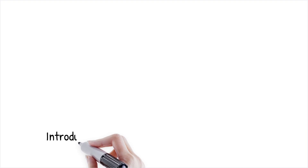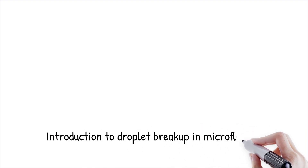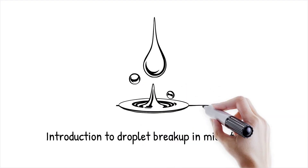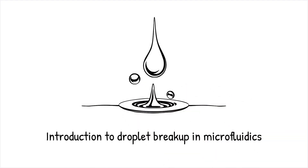Breakup, on the other hand, involves the splitting of a larger droplet into smaller ones. This is achieved by applying external forces that overcome the cohesive forces maintaining the droplet's integrity. Key mechanisms for breakup in microfluidics include shear forces, extensional stresses, or active actuation through acoustic or electric fields.